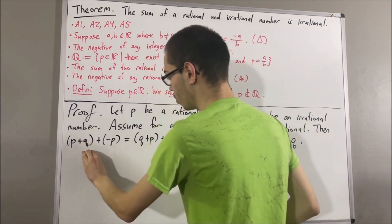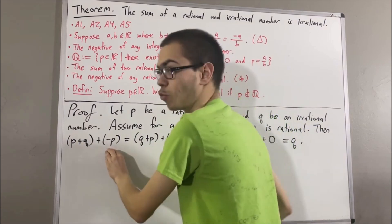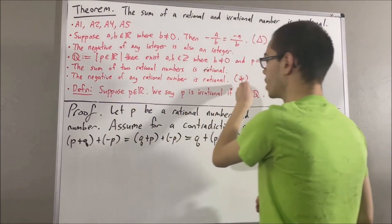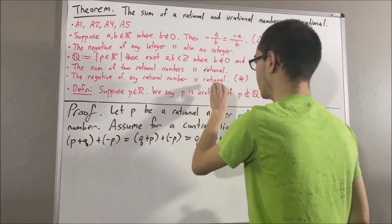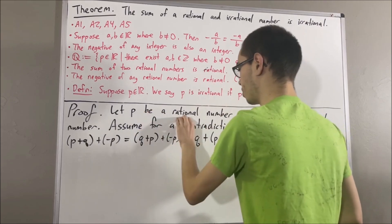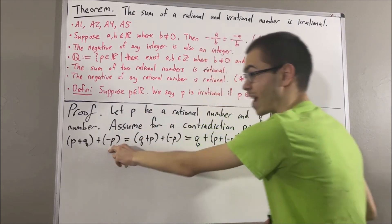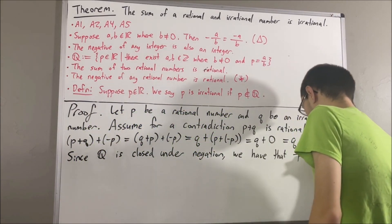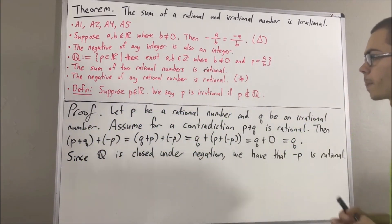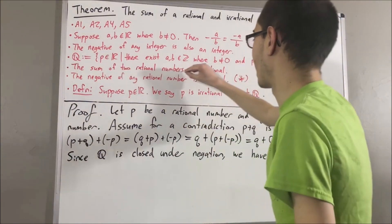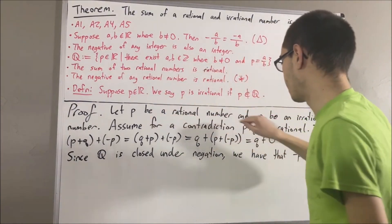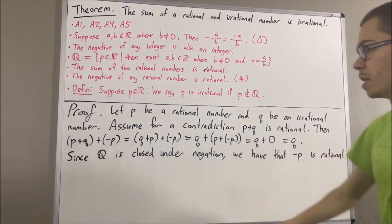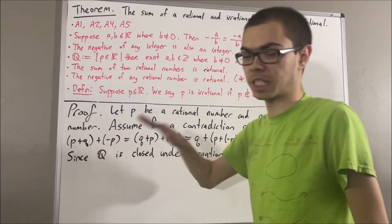But the claim is we can show that p plus q plus the negative of p is rational. To see why: by star, since the negative of any rational number is rational, and since p is rational, that implies negative p is rational. But then we know that the sum of any two rational numbers is rational. So since p plus q is assumed to be rational and negative p is rational, their sum — p plus q plus negative p — must be rational.